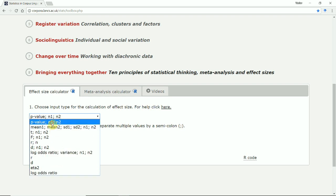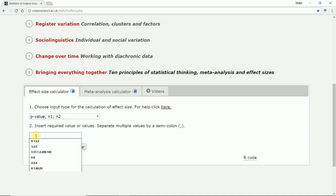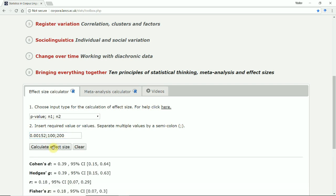For example, let's choose the p-value. If our p-value, the exact p-value, is something like 0.00152, semicolon, 100 texts in one corpus and 200 texts in another corpus, and we just calculate the effect size.